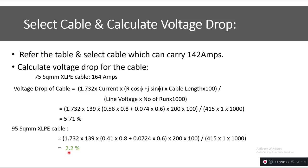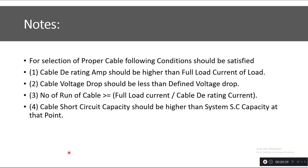Before finalizing the cable, you should verify four conditions. First, the cable's derated current capacity must be higher than the full load current — which we confirmed. Second, the cable voltage drop must be less than the defined limit of 5% — which is satisfied at 2.2%. Third, the number of cable runs: in this example we used one run, but if multiple runs are needed, calculate it as full load current divided by cable derated current.